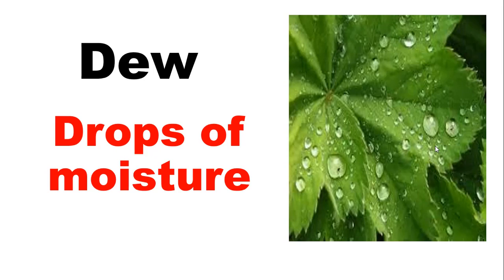What is the meaning of dew? Dew are the drops of moisture which are visible on leaves or grass in early morning. You can see the drops of dew in this picture — these drops on a leaf are called dew.